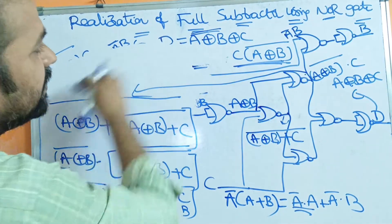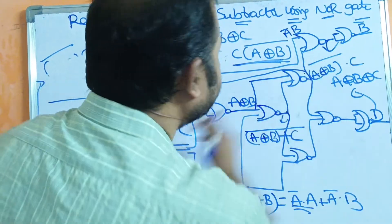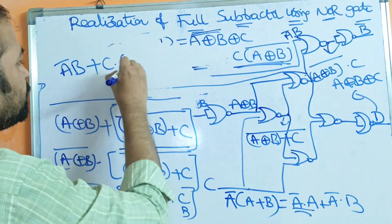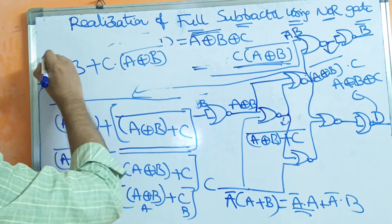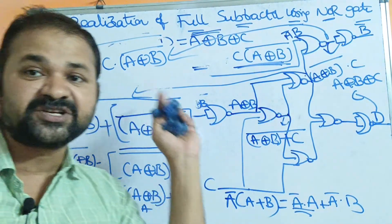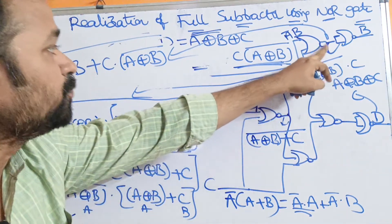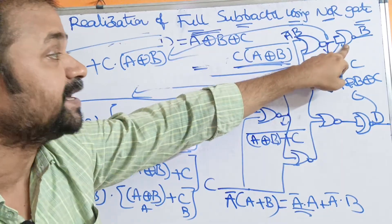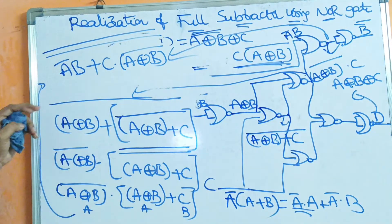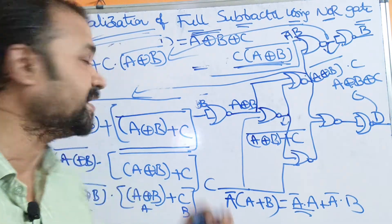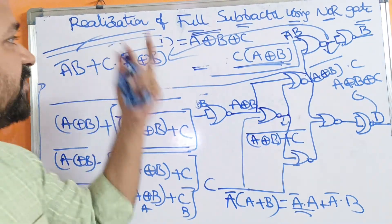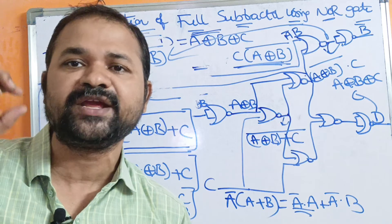We pass this as input to the single-input NOR gate, which acts like a NOT gate. The expression A_bar·B + C·(A XOR B)_bar, when complemented, gives the double-bar which cancels out, producing A_bar·B + C·(A XOR B)_bar — which is exactly the Borrow expression. In this way, we can implement a full subtractor using only NOR gates.